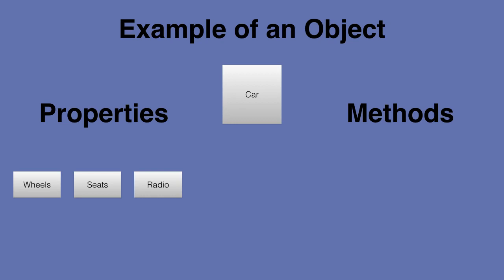And just to give an example of the methods, or the functions, or the behaviors, right, they all mean the same. We have the wheels. Let's say we move the wheel. That could be a method of this object.